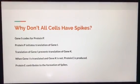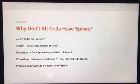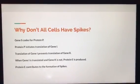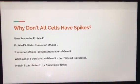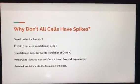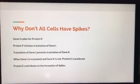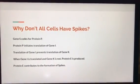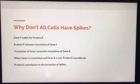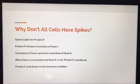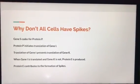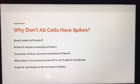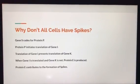Some reasons this would happen in nature would be that perhaps the cells with spikes have to be present in certain patterns or locations to be functional on the beetle. A way this could happen on a biological level would be if S were a gene that coded for protein P, if protein P initiated the translation of gene I, if the translation of gene I prevented the translation of gene K, and then when gene I was translated and gene K was not, protein E could be produced. Protein E would then contribute to the formation of spikes.